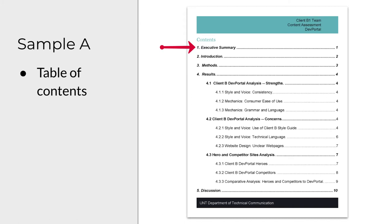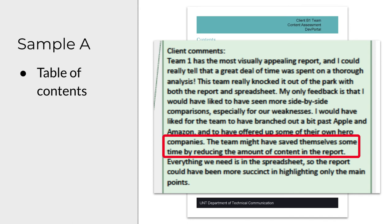Sample A includes an executive summary — a very important technical report writing tool. If you don't know about executive summaries, I encourage you to learn about them. There's an introduction, a method section, and then the results section which is the bulk of the report and includes three big subparts: a part about strengths, a part about concerns, and a part about hero and competitor analysis. Then the final part is a discussion. One evaluative comment I'll make is that the use of a table of contents makes sense with a lengthy document. However, one of the client's comments on this sample was that much of the information in the report wasn't needed — the spreadsheet is the primary deliverable of interest to the client.